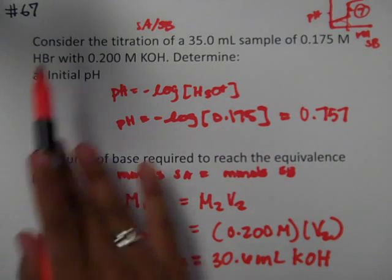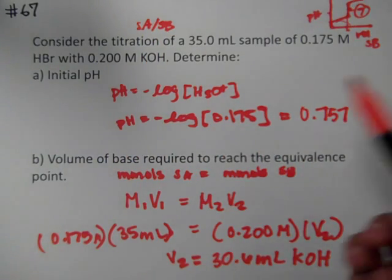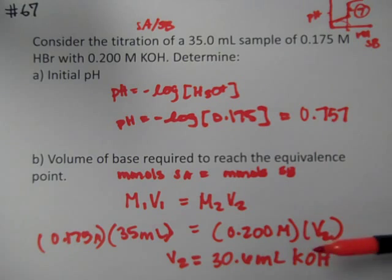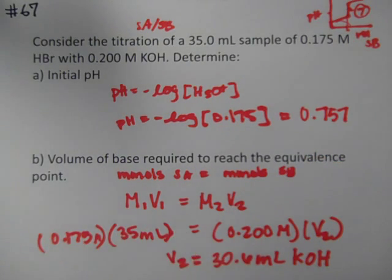So remember, initial pH for a strong acid-strong base is just negative log of the concentration, and M1V1 equals M2V2 is how we're going to always solve for the equivalence points because remember both the moles are equal.